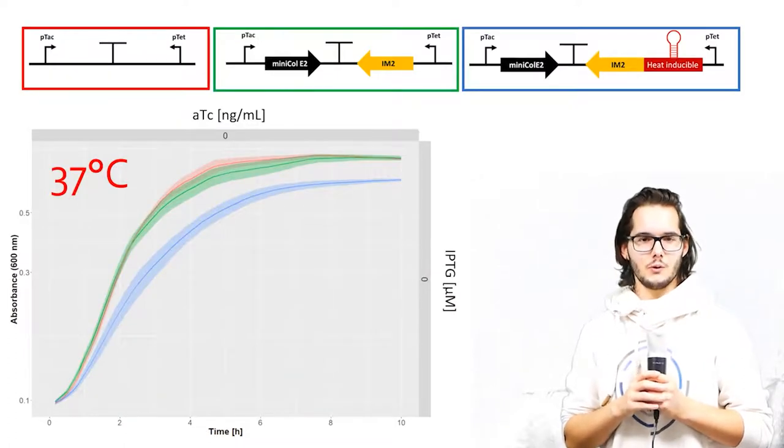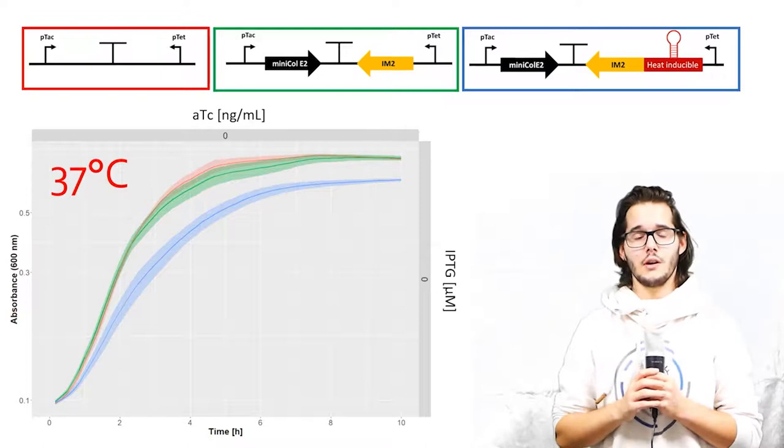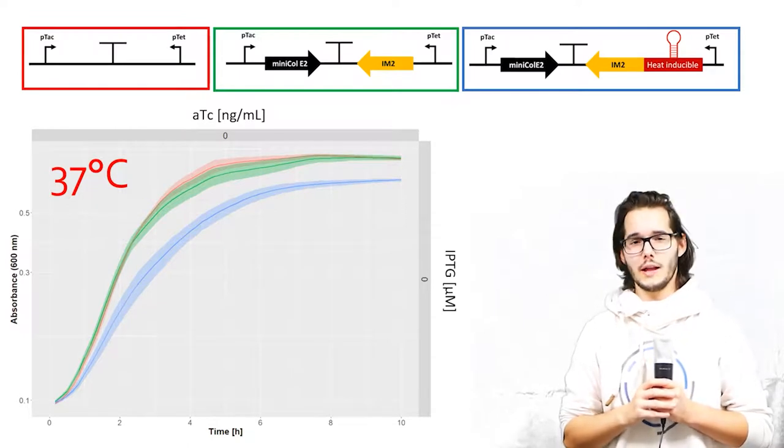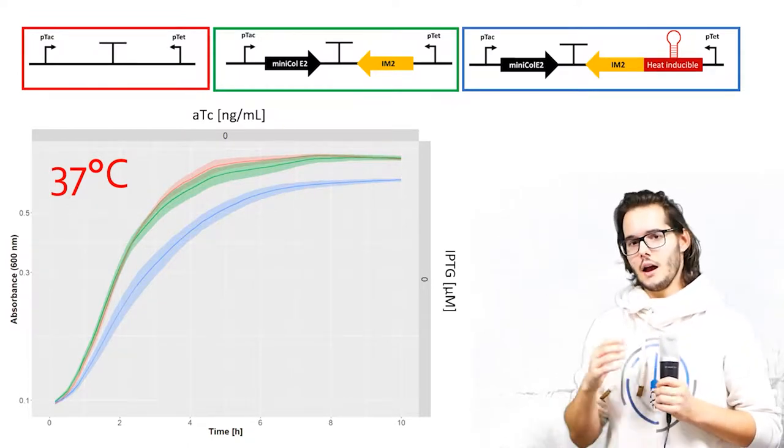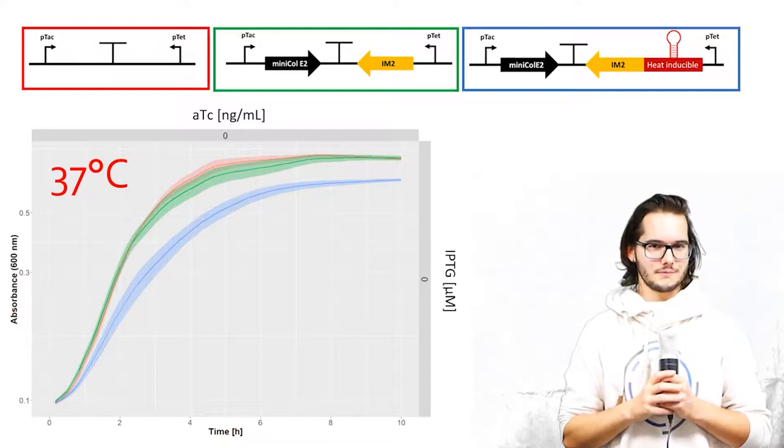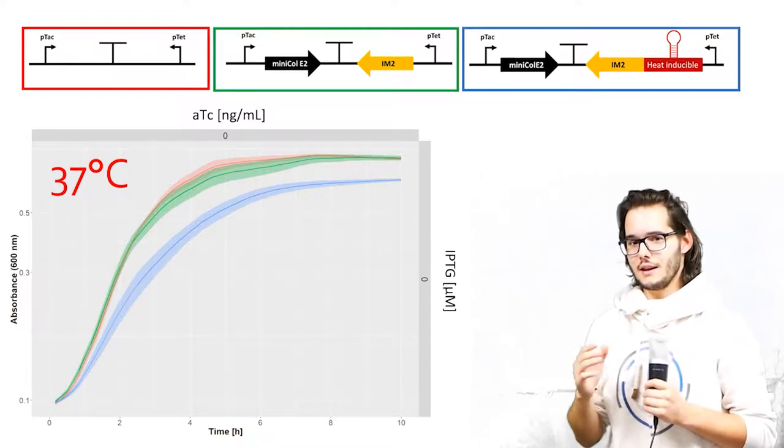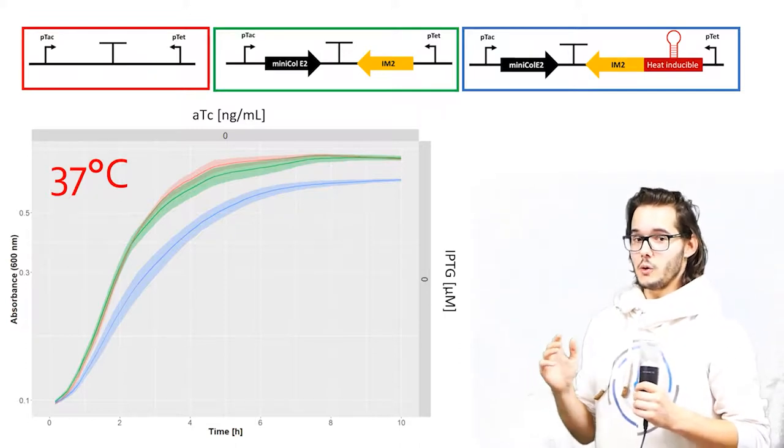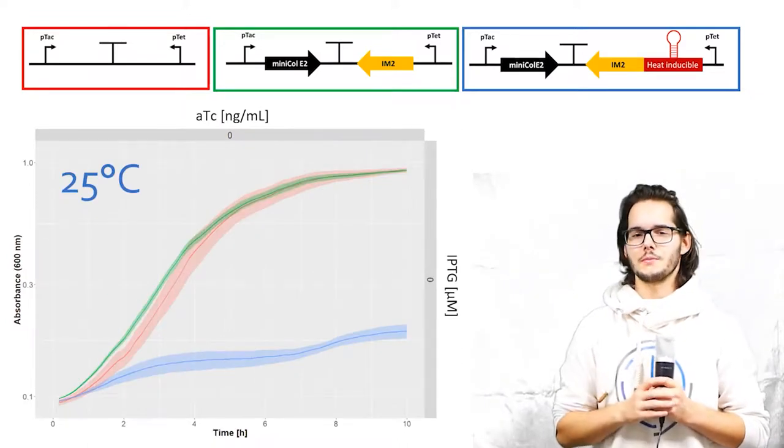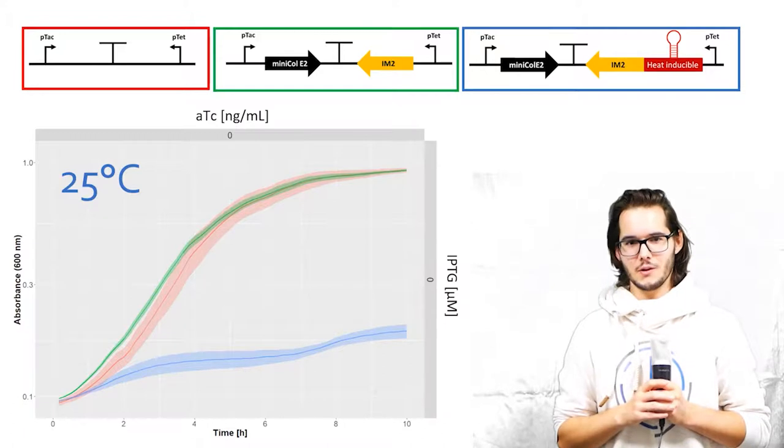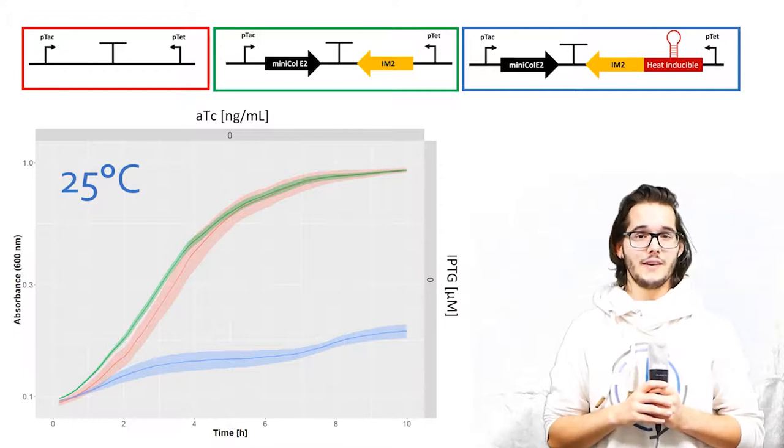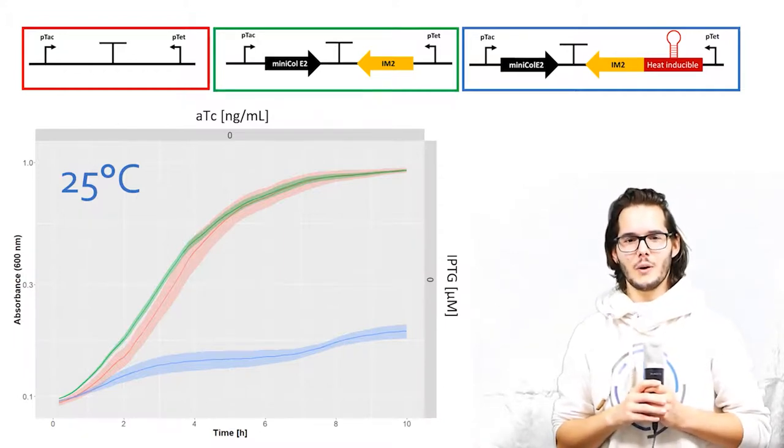We then test the effect of the heat-inducible thermosensor, which reduces the expression of the antitoxin when it's cold. In this graph, we can see that at 37 degrees and without stimulation of toxin and antitoxin, the bacteria with the three variants of the kill switch show a similar growth, with the bacteria containing the thermosensor in blue showing a slightly decreased growth rate. When we then turn down the temperature, we are clearly able to see the effect of the thermosensor, which leads to the cells to grow much slower. While this is the end of our lab work, we are already very confident with our results. And that's why we started thinking ahead, which leads us to our proposed implementation.